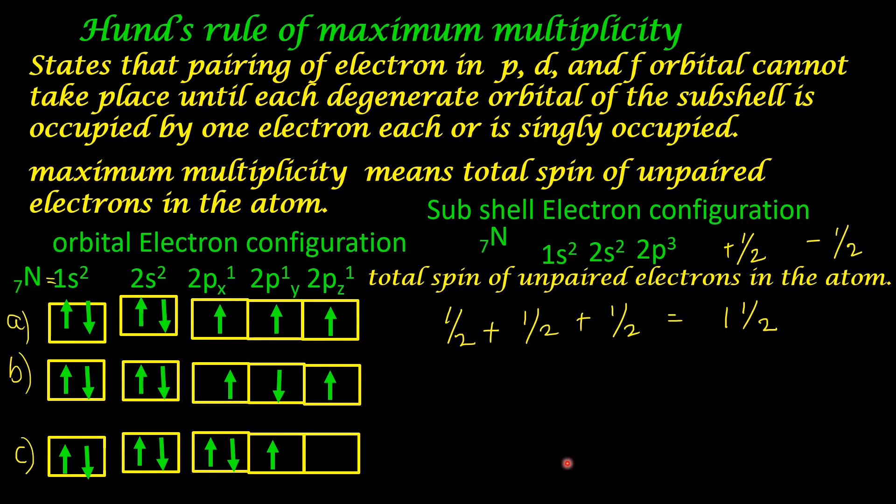So the magnitude of the spin becomes half plus negative half plus positive half, that becomes half only. What will be the value for C option? In option C, there is only one electron which is unpaired. So here the value will be half only. So maximum multiplicity is for option A.